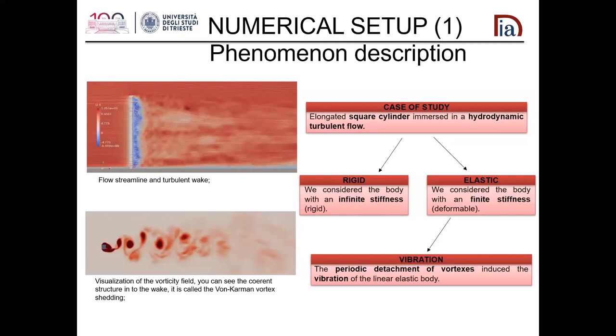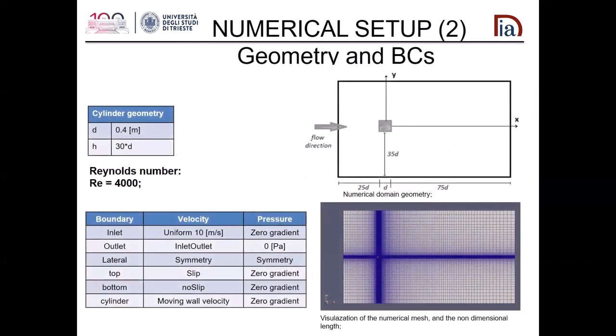The vortex shedding induces a periodic alternating lift force, so the vibration of the body is induced by this alternating periodic pressure. For the geometry and boundary conditions, we use a square cylinder of 0.4 meter diameter with a span of 30 diameters. It is immersed in a hydrodynamic turbulent flow at a Reynolds number of 4,000 — the minimum value to have a complete turbulent wake — in order to minimize computational cost.